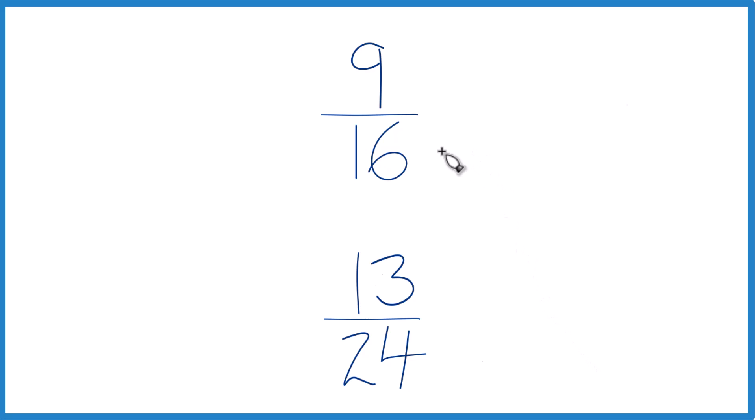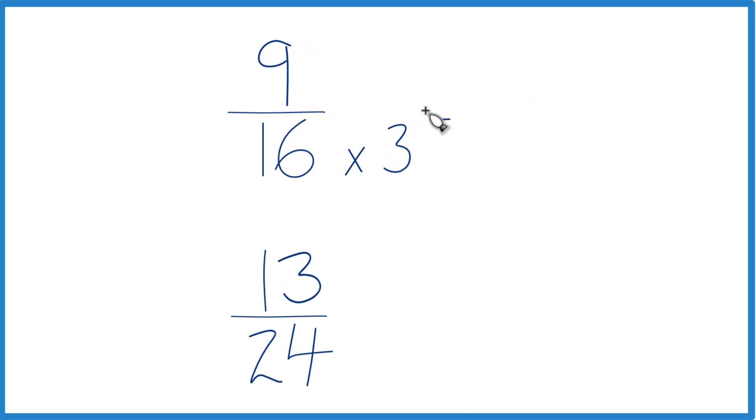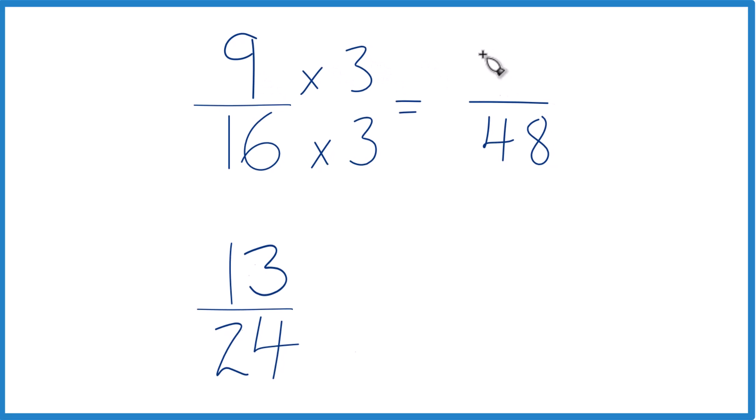So I'm going to multiply 16 by 3, and that's going to give me 48. But I can't just multiply the denominator, I've got to multiply the numerator as well. So I'm going to multiply this times 3, 9 times 3, 27. And these are equivalent fractions, they have the same value, this is just in different terms here. So they're equal.